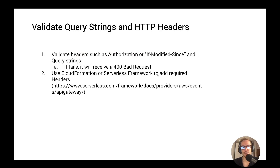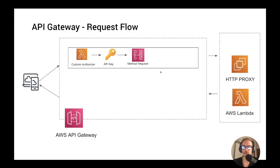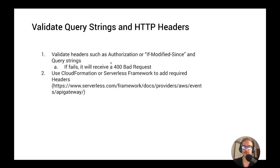The first parameters I want to show are the query strings and the HTTP headers. Let's say that your API may require certain headers, like the classic example is the authorization header or the if-modify-since header when you want to make conditional requests. And you want to hit the integration step of your API — the AWS Lambda or the HTTP proxy — only if those headers are in the request.